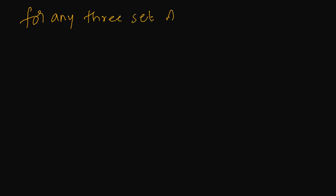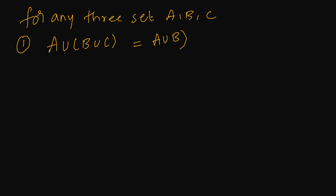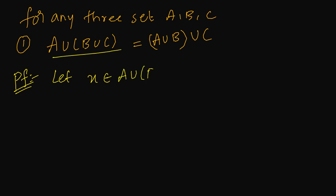Let us see how to prove the associative law for the first law. For any three sets A, B, C, we can say that the first law is: A union B union C is nothing but A union B, then we need to take union with C. So, how to prove? First of all, let us consider one element X from the left hand side, that is A union with B union C. The meaning of this is: either X belongs to set A, or X belongs to set B union C.